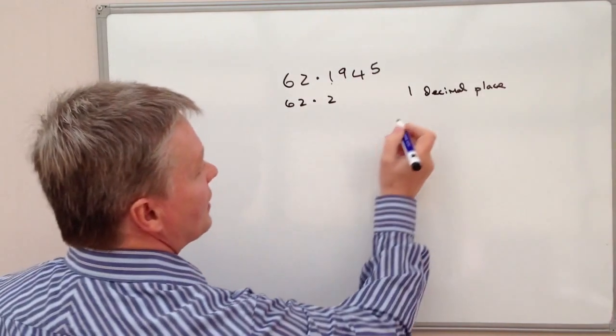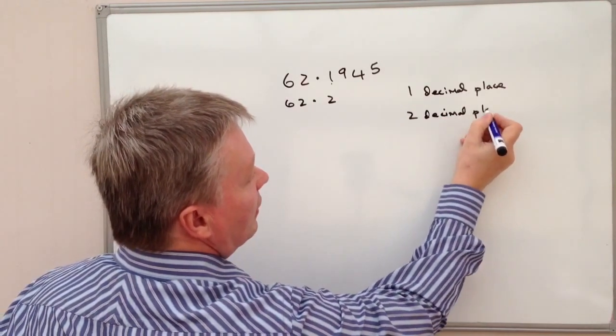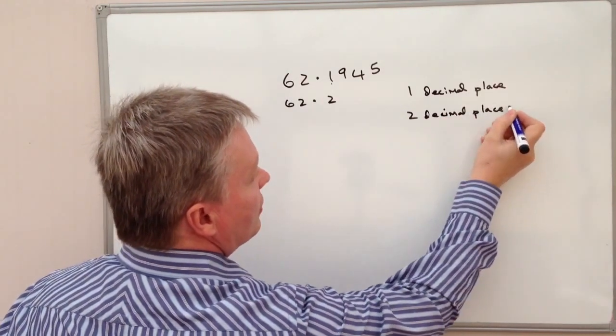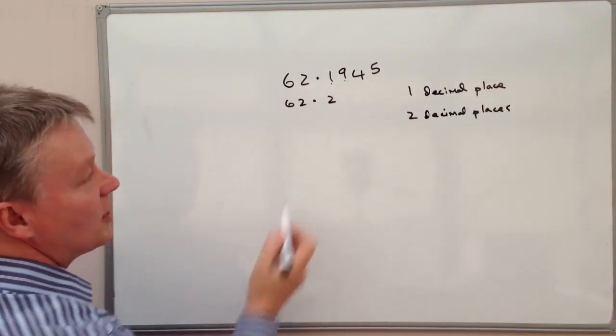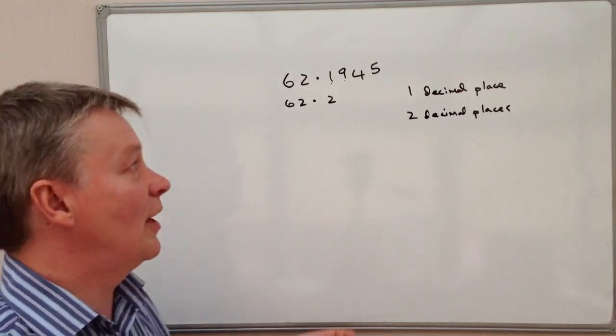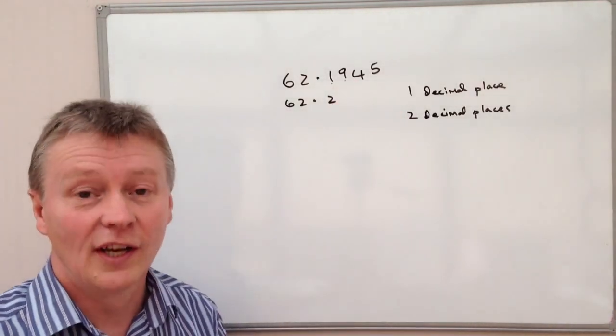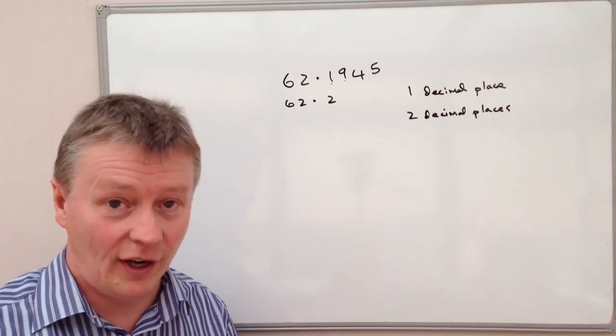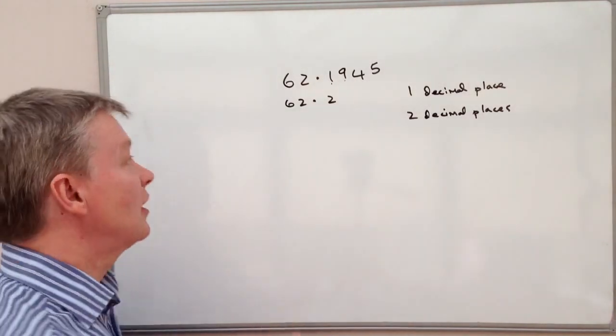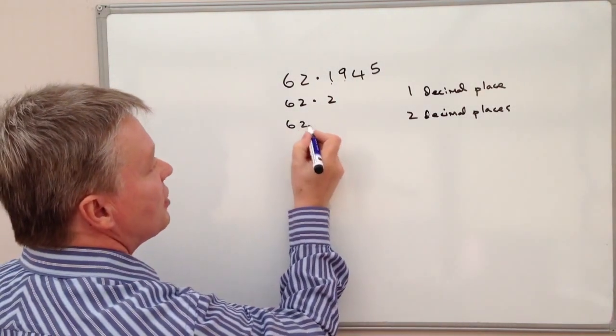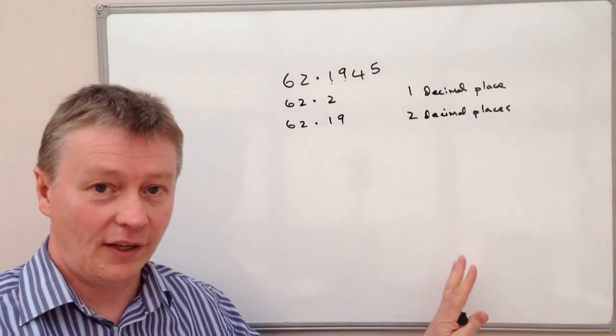So let's have a look at two decimal places for the same number. So two decimal places. So I look at the second decimal place, which is nine. And that's fine because if I look at the third decimal place, that's a four. So in other words, it's below five. So what that means is that nine remains unchanged and it becomes 62.19 to two decimal places.